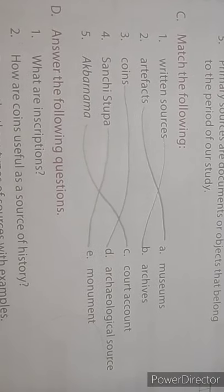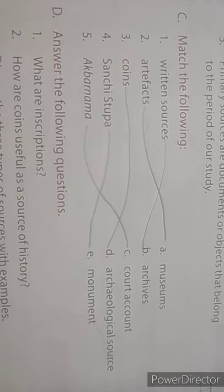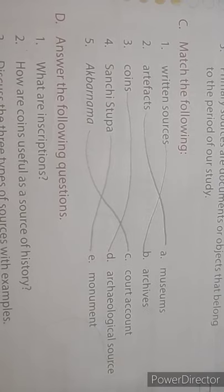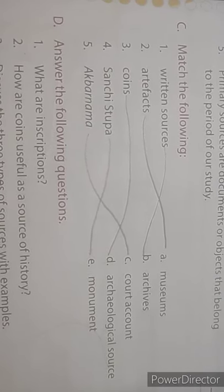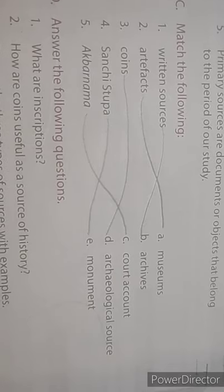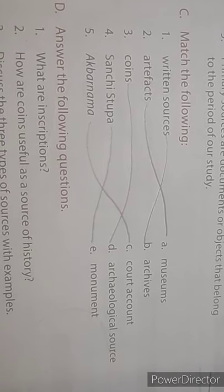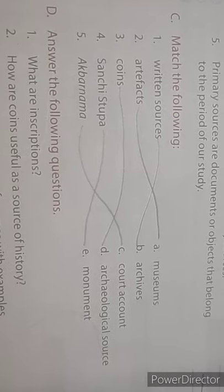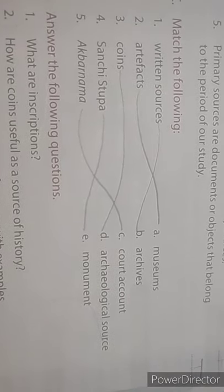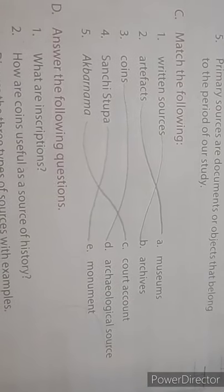Now come to question C: Match the following. Written sources — archives. Artifacts — museum. Coins — archaeological source. Sanchi Stupa — monument. Akbar Nama — account.